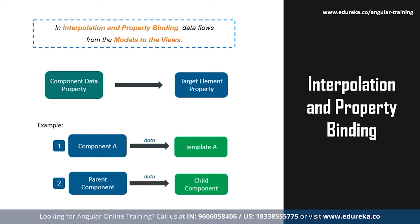Now talking about property binding: in property binding, the value flows from a component's property into the target element's property. Property binding can be used to read or pull data from target elements or to call a method that belongs to that target element. The events raised by the element can be acknowledged through event binding, which will be covered later. In general, the component property value will be set to the element property using property binding.